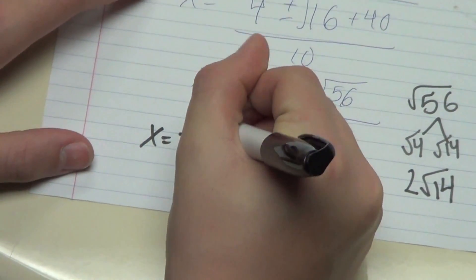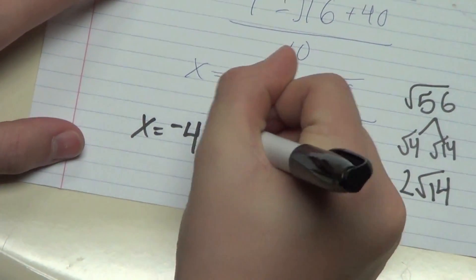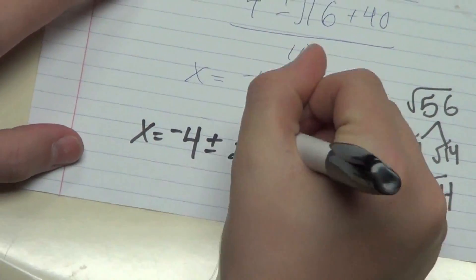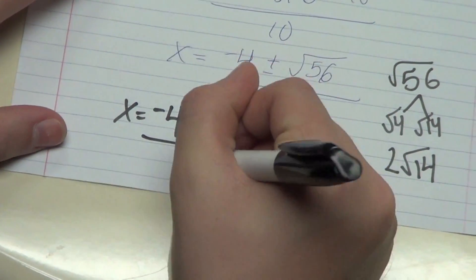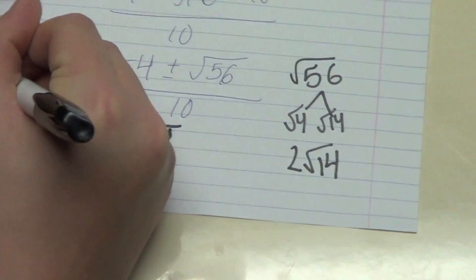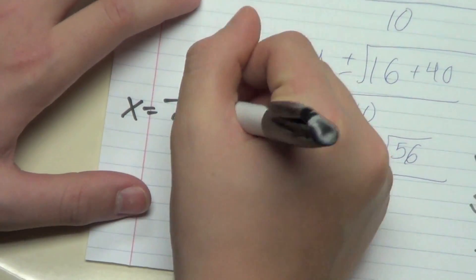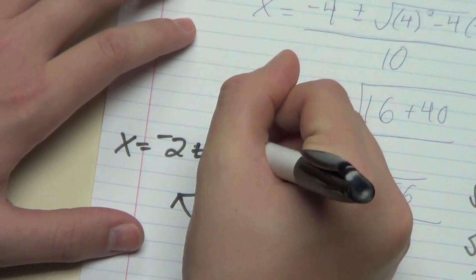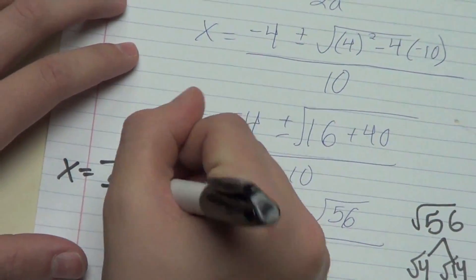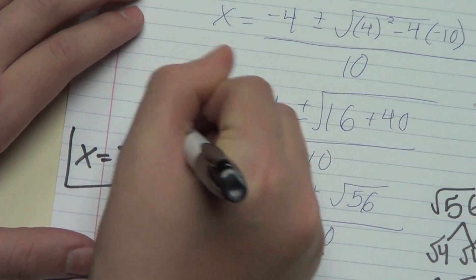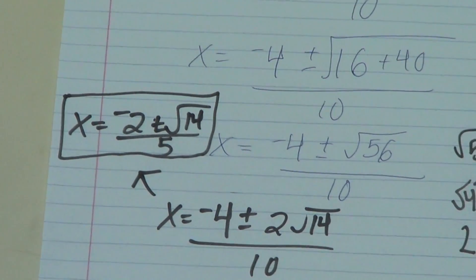X equals negative 4 plus or minus 2 rad 14 over 10. Now simplify. X equals negative 2 plus or minus rad 14 over 5. That was so easy. Yep. That's so much easier than trying to complete the square.